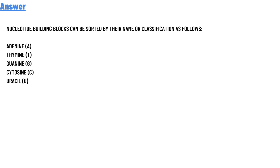Adenine (A), Thymine (T), Guanine (G), Cytosine (C), and Uracil (U). These are the nucleotide building block classifications.